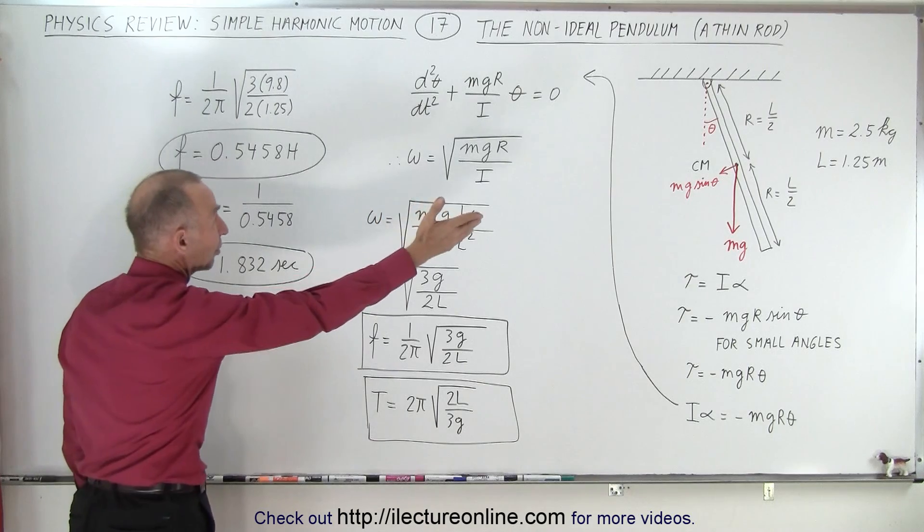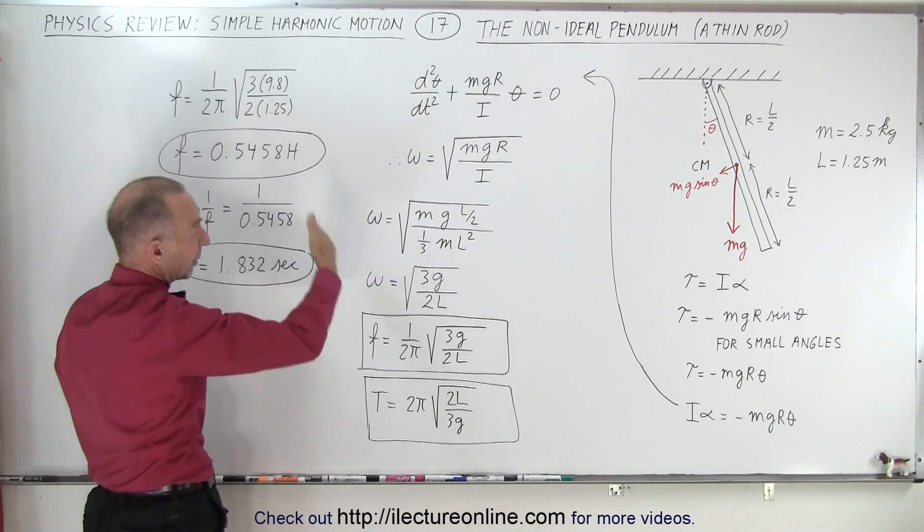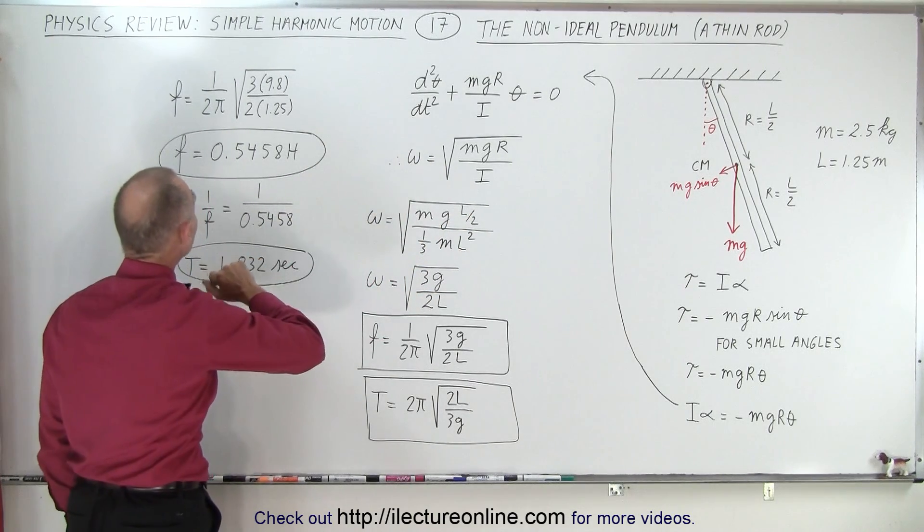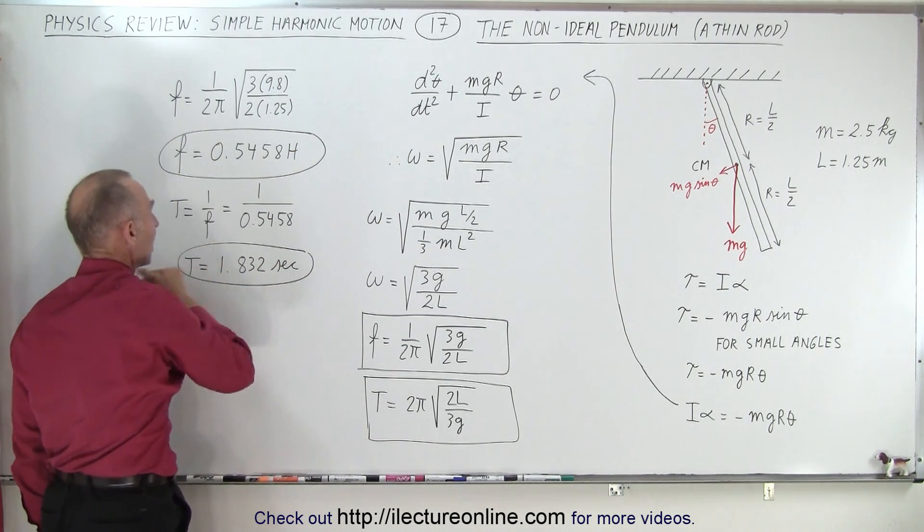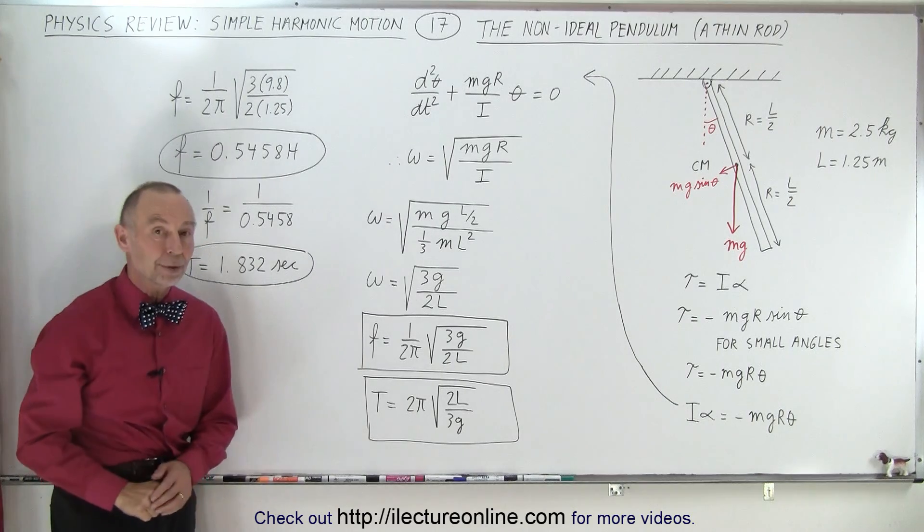And then if we plug in the values, well, we don't need the mass, the mass is canceled out, so we simply need the length. And g, g is 9.8, there's the length. So you find the frequency and the period as an example.